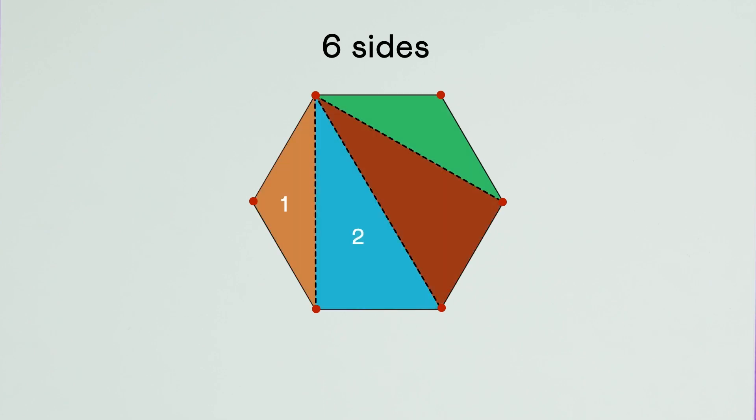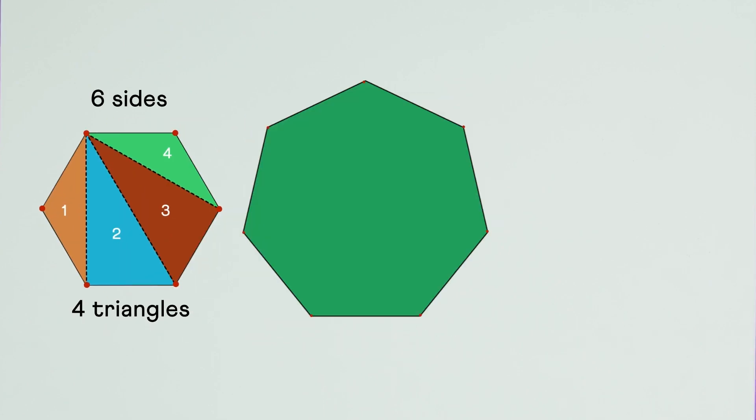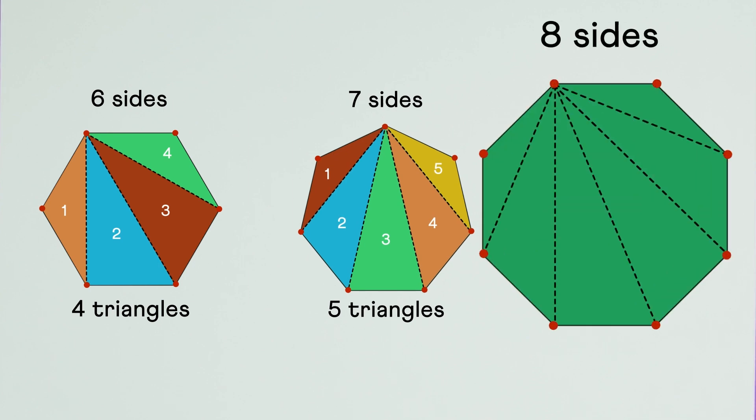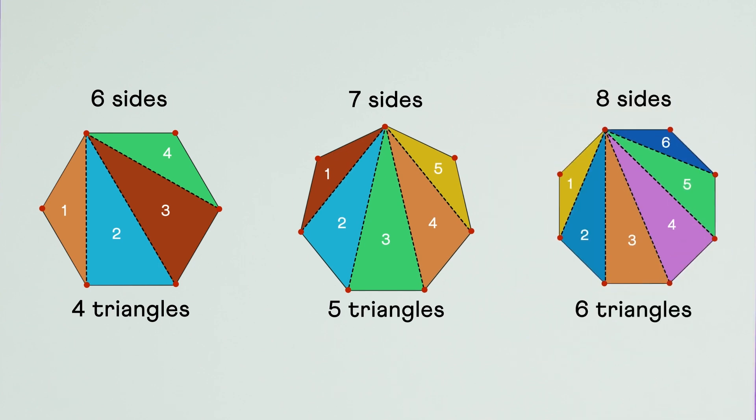We can do the same with any polygon. Just take any one vertex and join it with all others. This way we can divide it into triangles. But how many triangles will we get? A hexagon with six sides gives four triangles. A heptagon with seven sides: five triangles. An octagon with eight sides: six triangles. The number of triangles is always two less than the number of sides of the polygon.